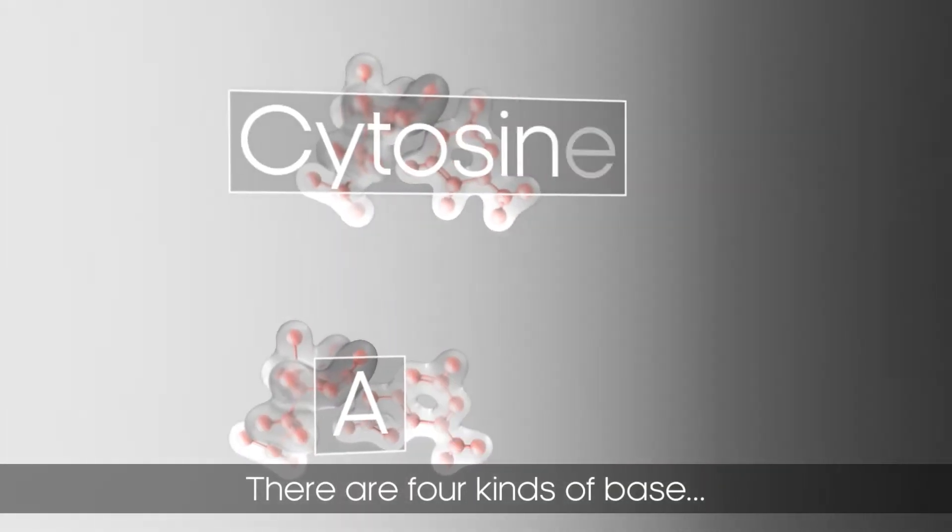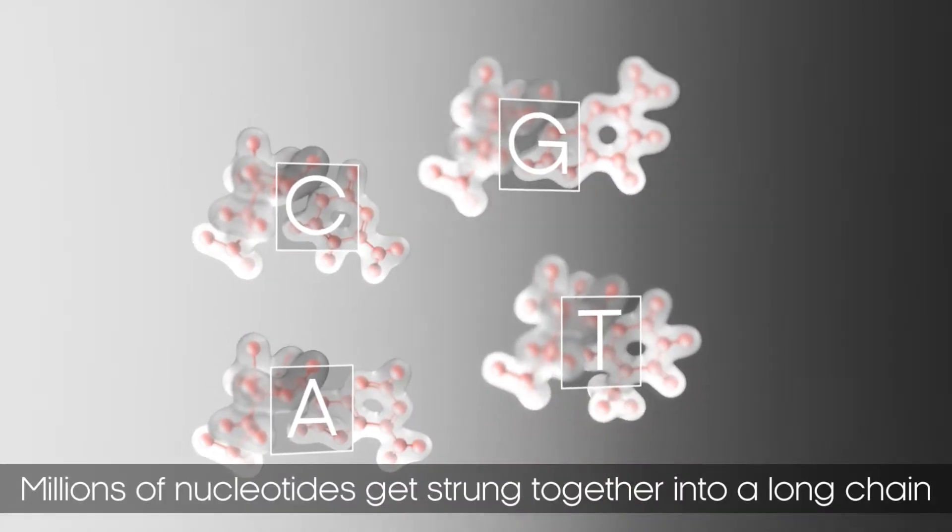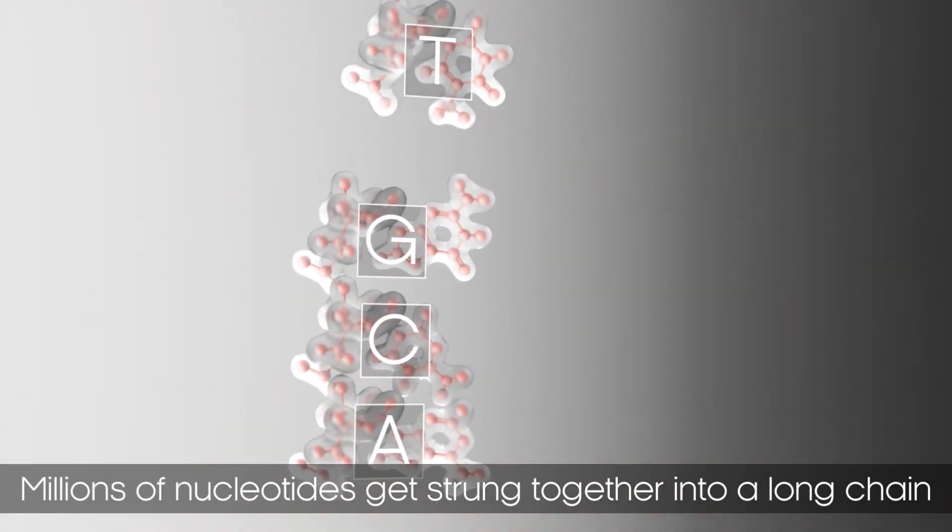There are four kinds of base called A, C, T, and G. Millions of these nucleotides get strung together into a long chain.